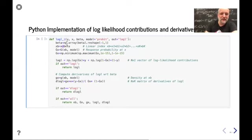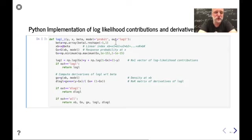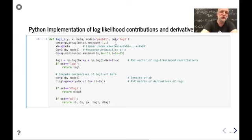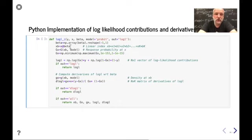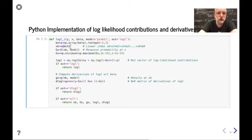I'm making sure that beta is really k-by-1. Sometimes you lose the last dimension in Python — an annoying artifact for people used to MATLAB working with linear algebra. Then I calculate the linear index, which is the matrix product of x and beta — that's x'beta, a sum of x1*beta1, x2*beta2, all the way up to xk*betak. Then we throw that into our model for the response probability — if it's probit, that's the CDF of the standard normal; if logit, the CDF of the standard logistic distribution.